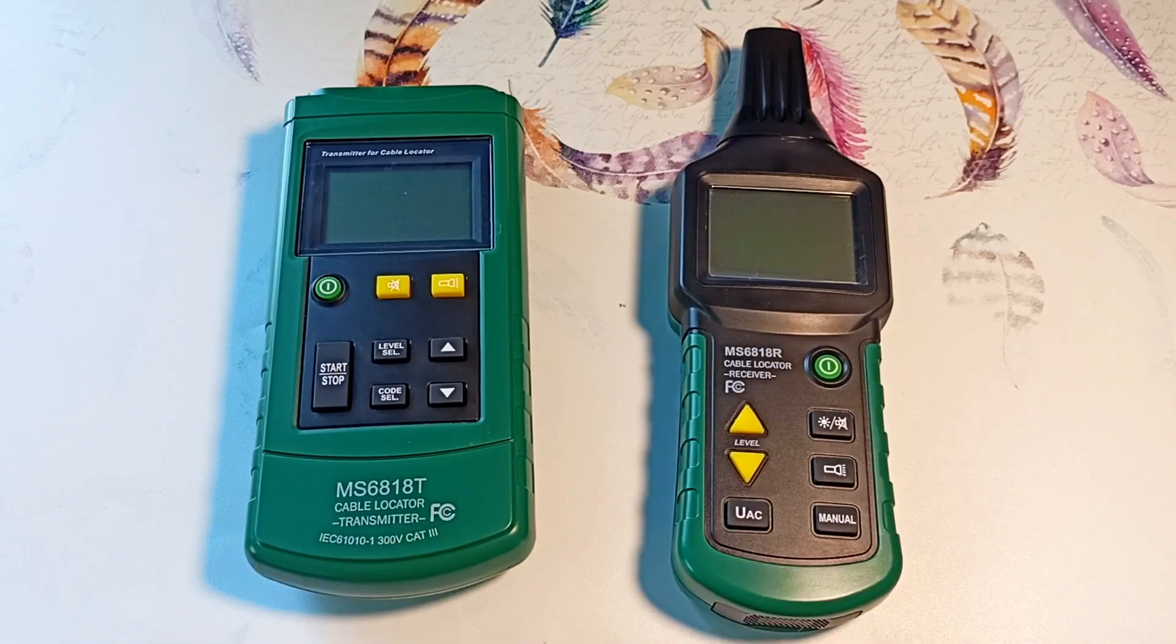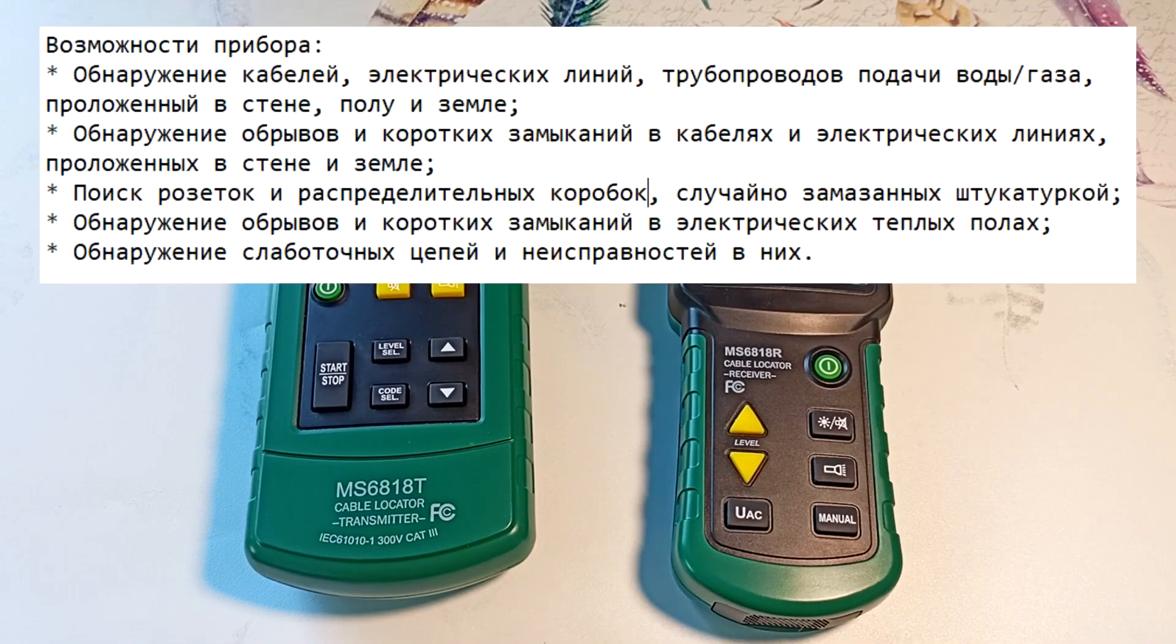What are the capabilities of the device? 1. Detection of cables, electrical lines, water, gas supply pipelines laid in the wall, floor and ground. 2. Detection of breaks and short circuits in cables and electrical lines laid in the wall and ground.